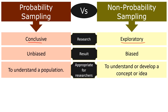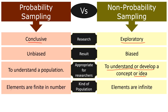Probability sampling is appropriate for researchers to understand the population because the subjects are chosen randomly, which is capable of representing the entire population, and so extrapolation of results to the entire population is possible. Conversely, as the subjects are chosen arbitrarily in non-probability sampling, this method is appropriate for researchers to understand or develop a concept or idea. Probability sampling is generally adopted when the number of elements are finite, whereas non-probability sampling is commonly chosen when the elements of the population are infinite.